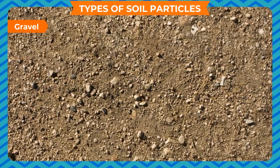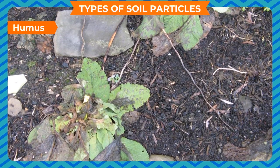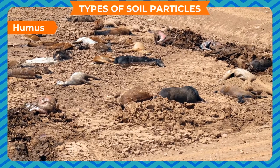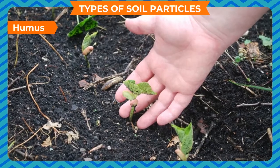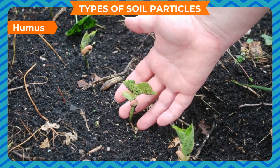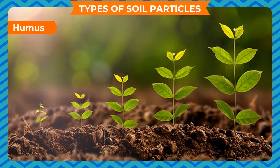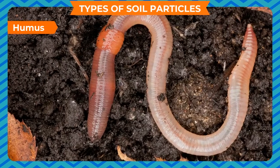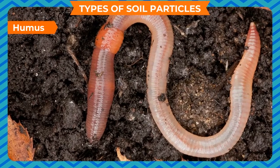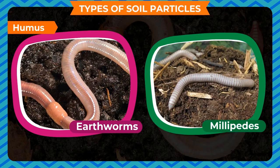Apart from soil particles, the other components of soil include humus. The dead and decaying remains of plants and animals present in soil is known as humus. Humus is significant because it makes the soil fertile, containing all the nutrients required by plants for proper growth. It also improves the water holding capacity of the soil and provides food to living organisms like earthworms, millipedes, etc.